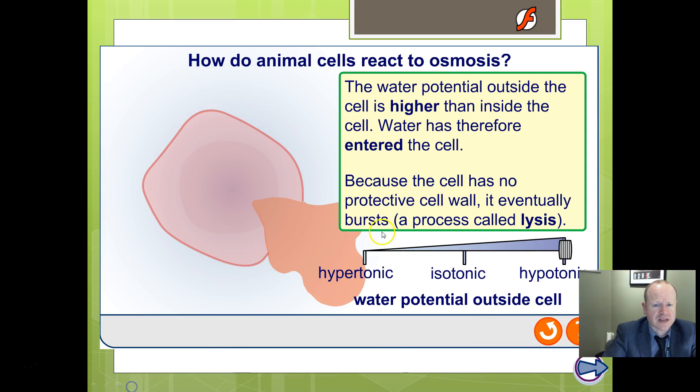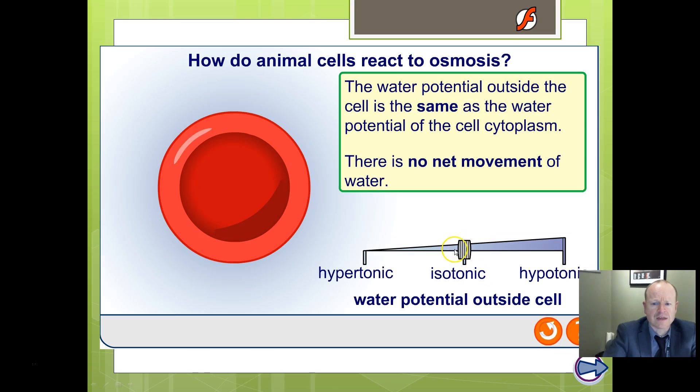Let's think about animal cells. Here we've got a red blood cell. So our typical red blood cell, no nucleus. Again, isotonic - no net movement overall. Water molecules move both in and out in equal directions.